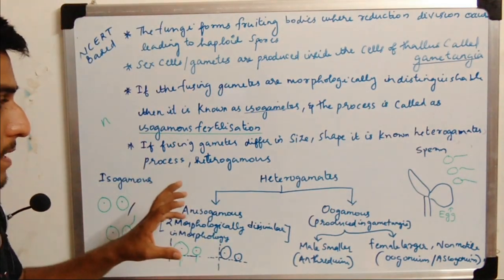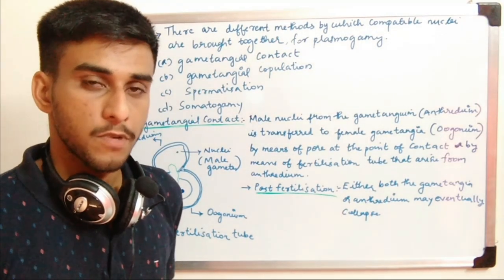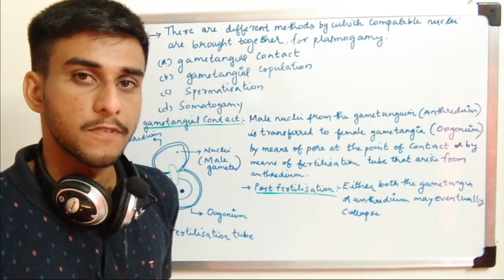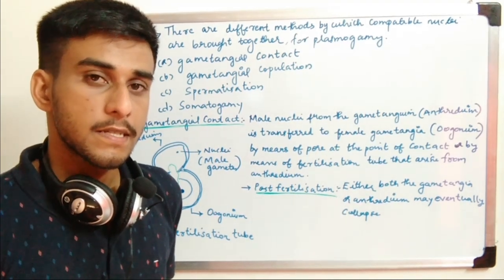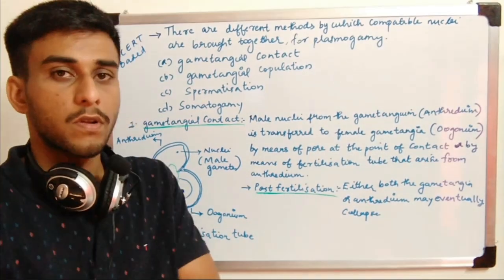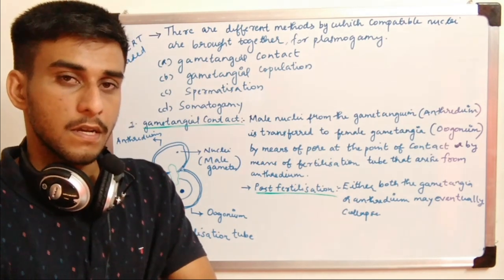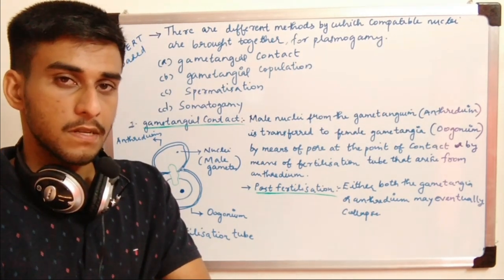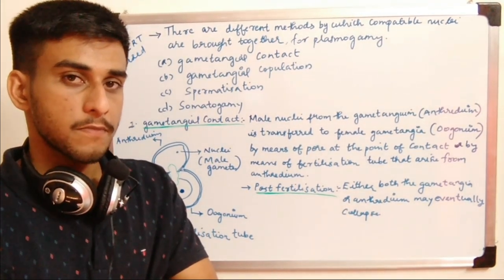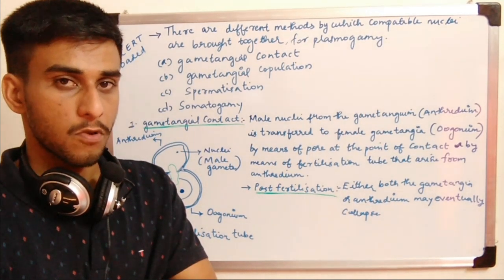Now we discuss the different methods by which plasmogamy can occur. Plasmogamy is the fusion of the protoplasm — the entire cell constituents including cytoplasm and nucleus. Two different compatible protoplasm fuse together in a process known as protoplasmic fusion or plasmogamy.